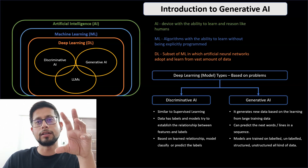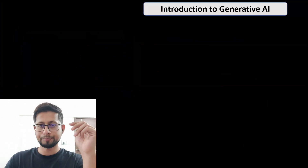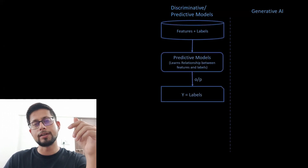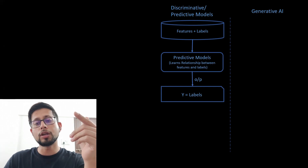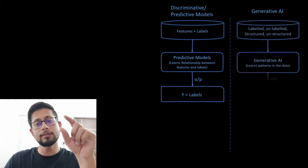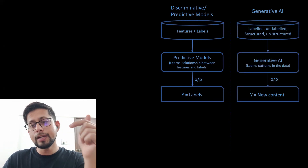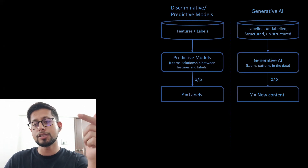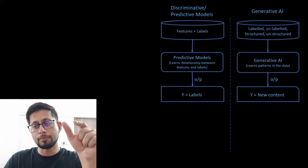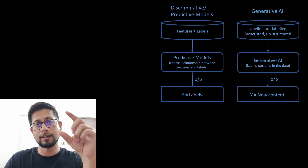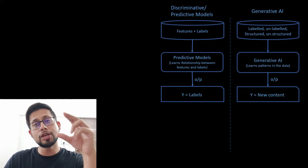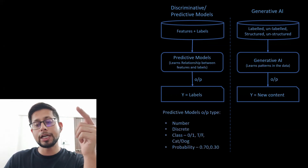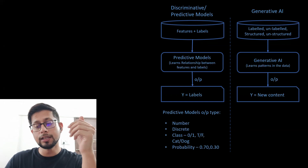Let's understand discriminative AI and generative AI through examples. In discriminative AI, features and labels are passed to predictive or discriminative models. They learn the relationship between features and labels, and the output is a label. In generative AI, we feed the model with labeled, unlabeled, structured, and unstructured data, train it on that huge amount of data, and the output is new content generated in line with what the model has learned.